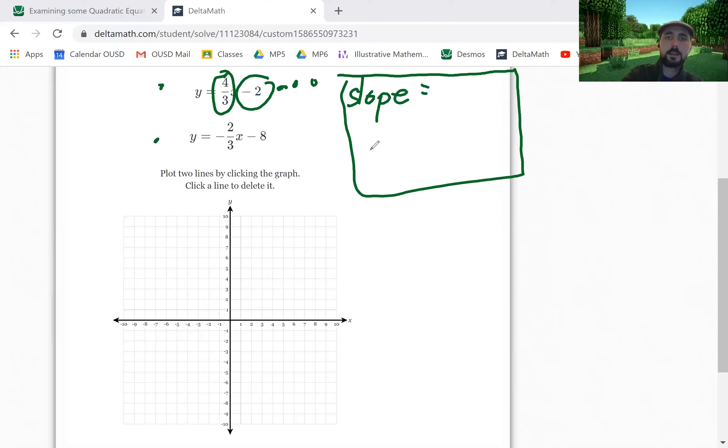Just checking in - you who are watching the video, can you see what I'm writing on the screen? I assume you can, but if you can't that's bad. The slope comes from the number in front of the x.